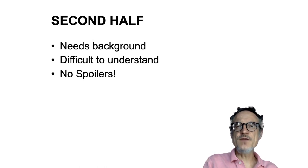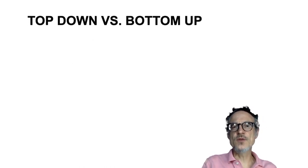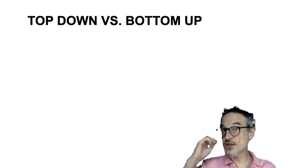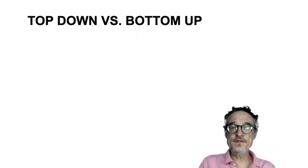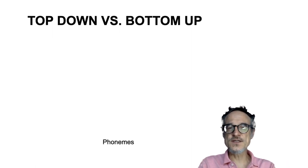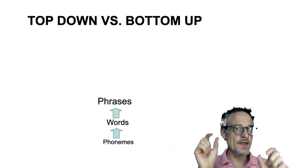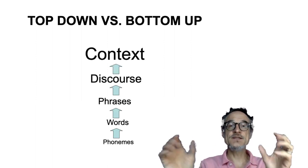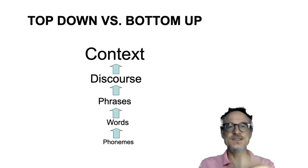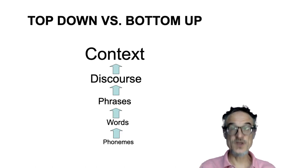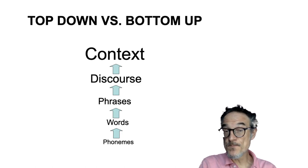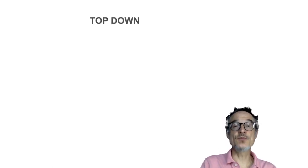Just one thing briefly about what's called top-down and bottom-up processing. If you ask people how they understand language — how do you understand English, or how do you understand Japanese — people often think that you listen to sounds first, then you put together the sounds into words, the words into phrases, the phrases into some kind of discourse or discussion, and from this we know the context. In fact, usually the opposite happens: what's called top-down processing.